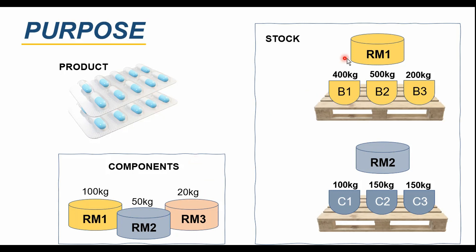let's say in the stock for RM1 we have three batches available: B1, B2, and B3. These three batch numbers have sufficient quantity to meet the requirement. Our requirement for RM1 is basically 100 kg, but when we look at the multiple batches, we have more than enough stock to meet the requirement.